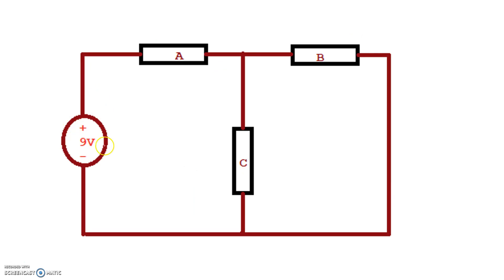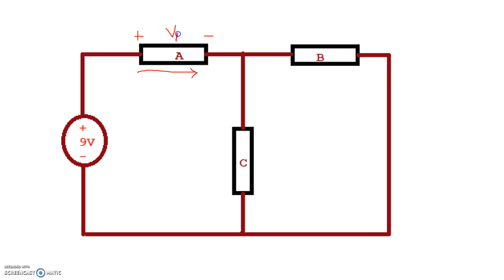Consider this circuit with a 9-volt source — that's an active element — and three passive elements called A, B, and C. Before we start circuit analysis, we need to first label the voltages and currents for each element. We randomly pick either the current direction or the voltage polarity, and the second follows. For example, let's say the current flowing through A was from left to right. Following passive sign convention, that dictates the voltage across A is plus on the left and minus on the right.